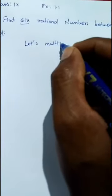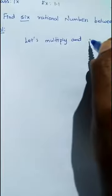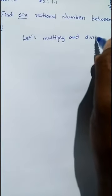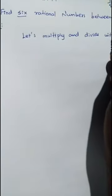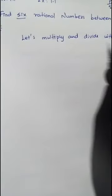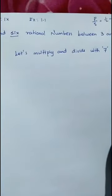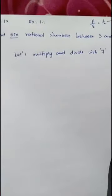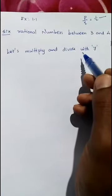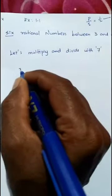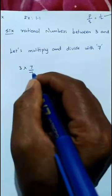Multiply and divide with 7. Because they are asking us to find out six numbers, we'll take six plus one - one number extra. Six plus one is seven. Now multiply and divide. When you cancel 7 and 7, the meaning is not changing.